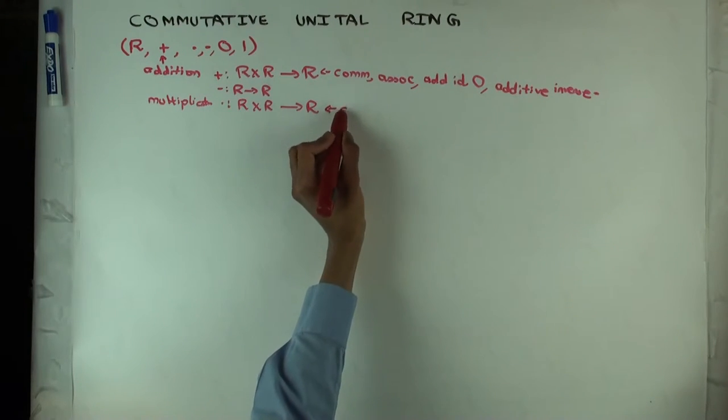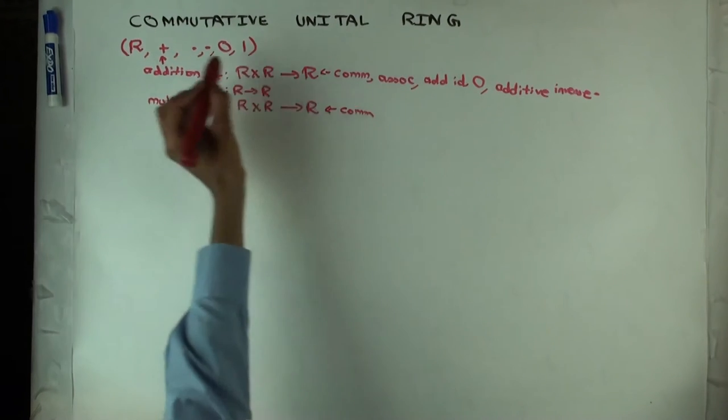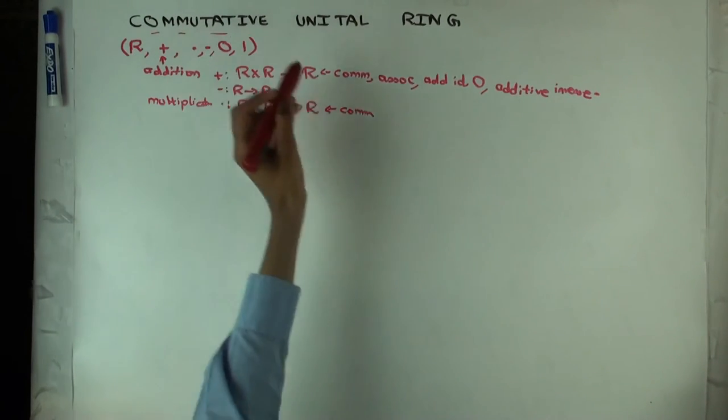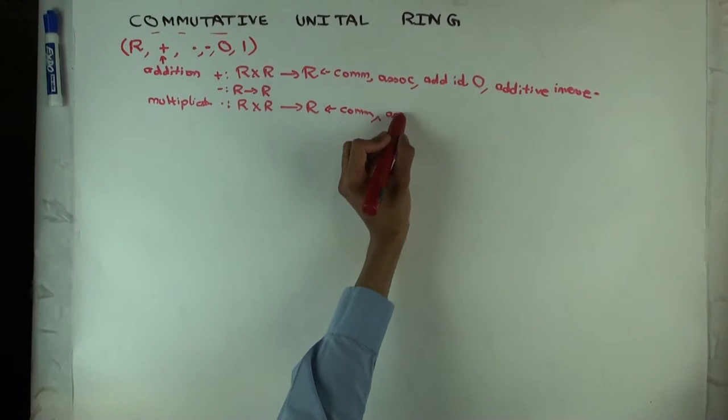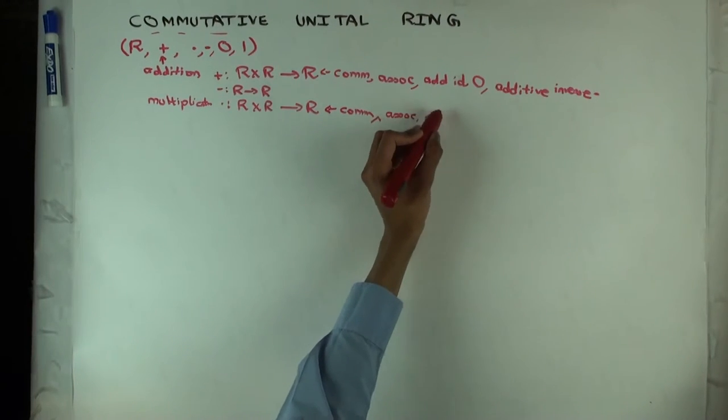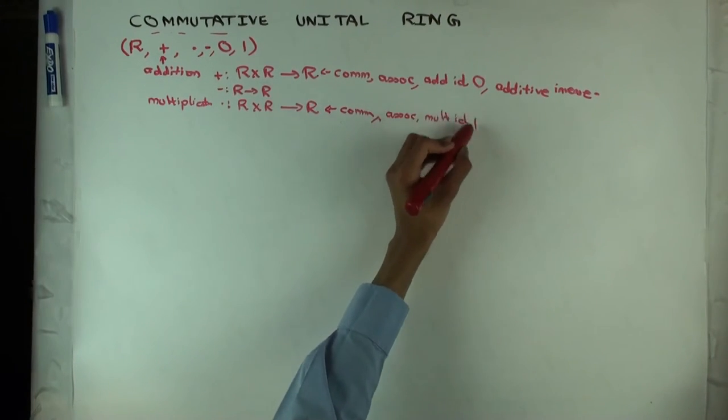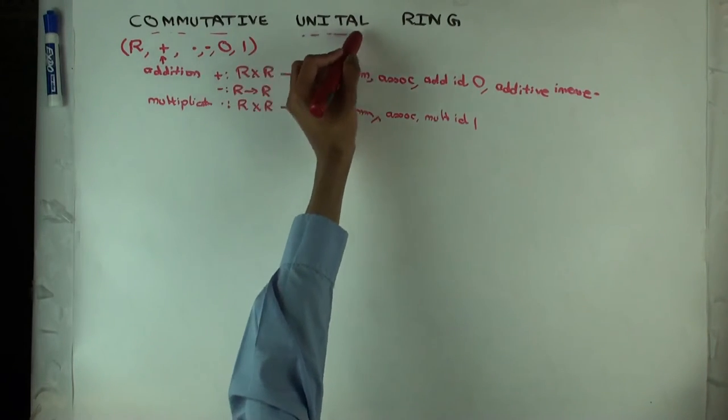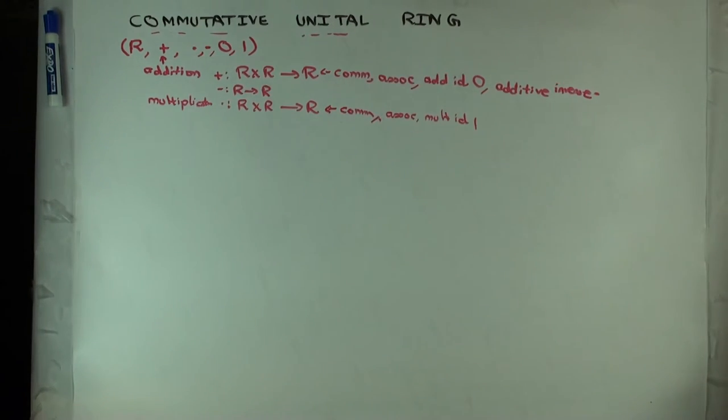Well, not quite all of them. So it's commutative because we are using the commutative unital. It's associative and it has a multiplicative identity. One. That's where the unital comes in.